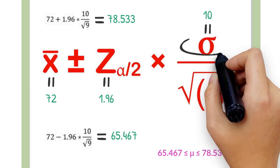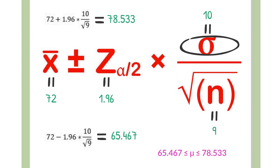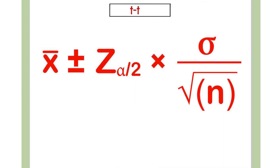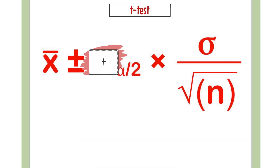In this example we knew the population variance of 10, but in the real world we will more than likely not know the population variance. In this case, the preferred statistical test is the t-test. The formula for calculating the confidence interval using a t-distribution remains similar to a z-distribution — we only change the z-distribution to a t-distribution.